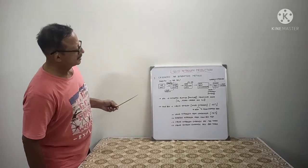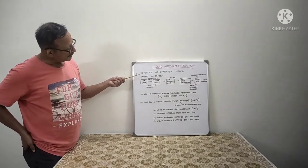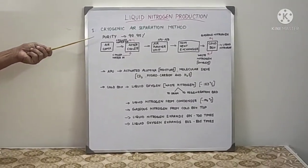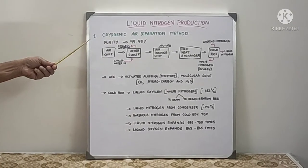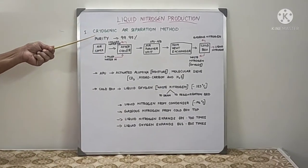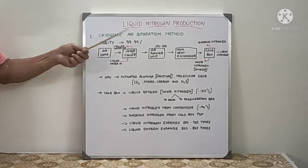Hi friends, in this episode we will see about liquid nitrogen production by means of cryogenic air separation method. Liquid nitrogen is produced by cryogenic method. In this we can get around 99.95% purity.